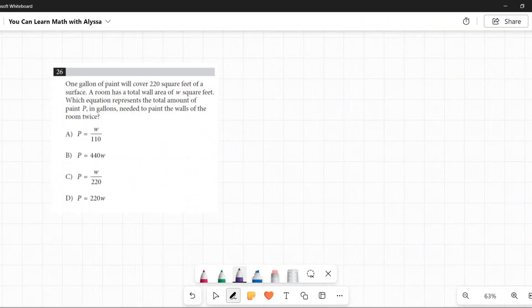One gallon of paint will cover 220 square feet of a surface. A room has a total wall area of W square feet. Which equation represents the total amount of paint P in gallons needed to paint the walls of the room twice?